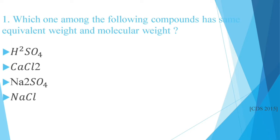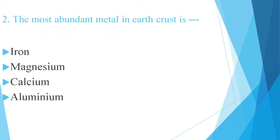Question number 2: The most abundant metal in Earth's crust is iron, magnesium, calcium, or aluminium. This question is very common. The correct answer is aluminium.